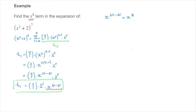Both sides of this equation are written as powers of x. So to find the value of r, we can get rid of the x's altogether and write 14 minus 2r equals 8. Solving this for r, we subtract 14 from each side.